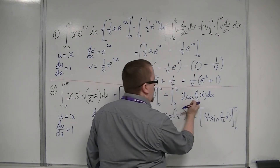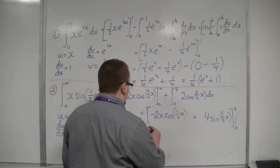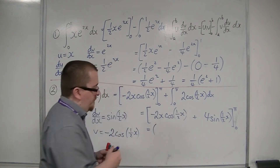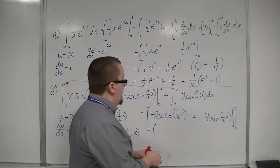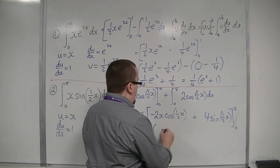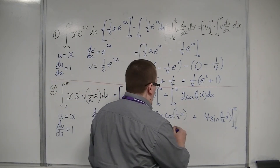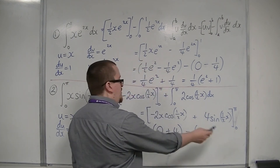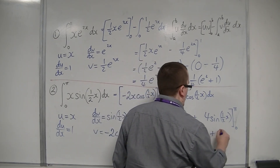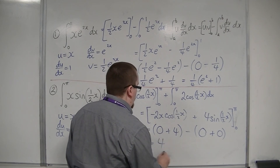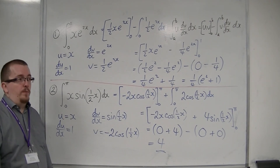So I can bring those two brackets together and evaluate. Cos of pi over 2 is 0, so this whole first term will be 0. Plus, sine of pi over 2 is 1, so we have plus 4. Taking away, substituting in 0: this will be 0, and 4 sine of 0 is just 0. So the answer is just 4. And that's how we can deal with definite integrals with integration by parts.